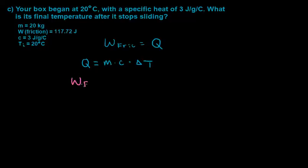Our work due to friction is going to be equal to the mass of our box times our specific heat times our final temperature minus our initial temperature, because we are going to be solving for our final temperature.